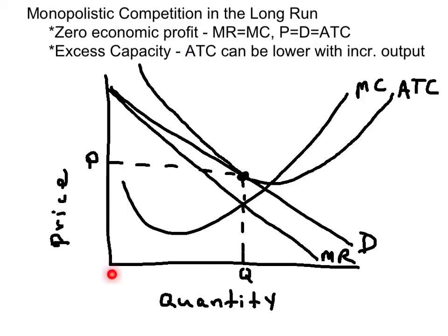you do your axes with price and quantity. Then we sketch out our demand curve, downward sloping, and then the marginal revenue curve below the demand curve. Put in your marginal costs, and then we can establish our price and output.